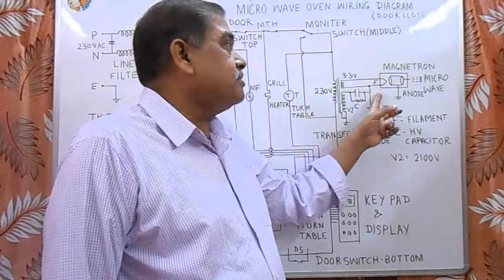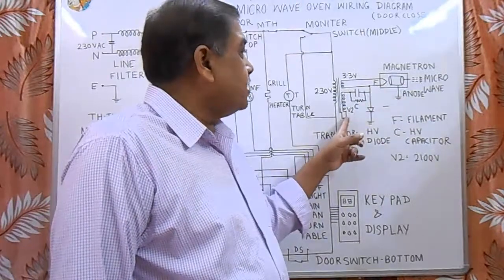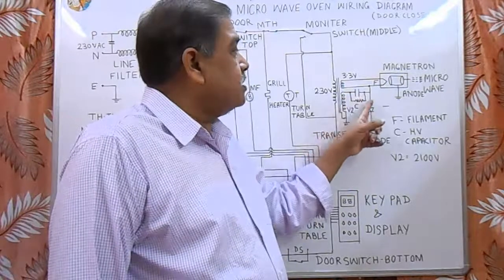When the filament heats, electrons are emitted from the filament. Then this second winding produces 2100 volt. With the help of this condenser and diode,